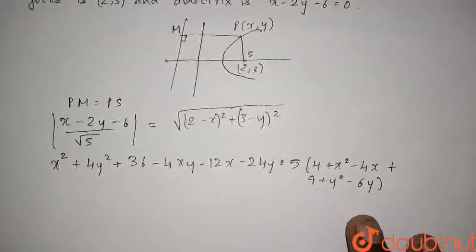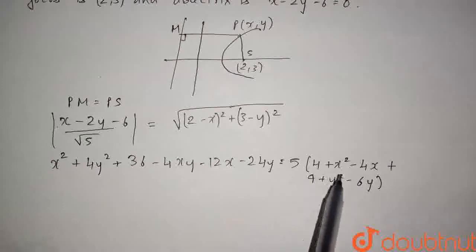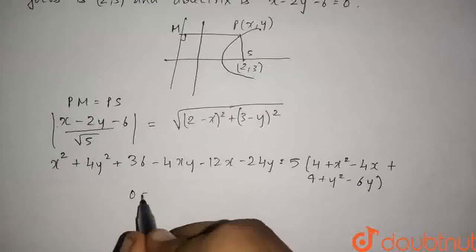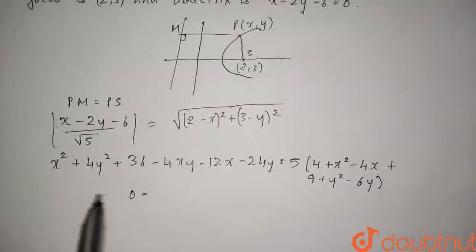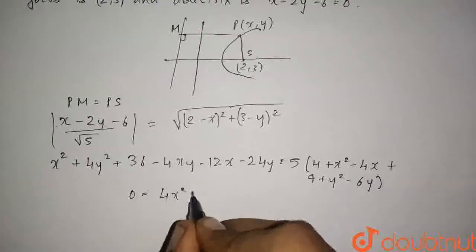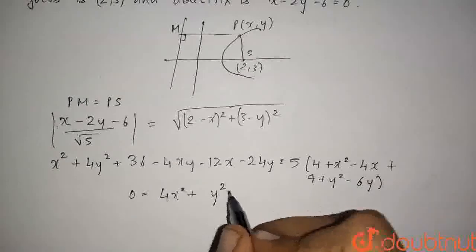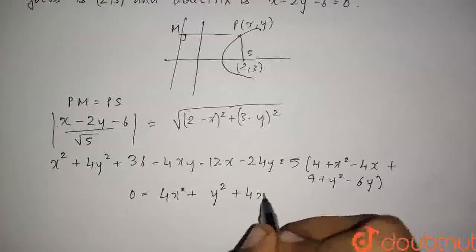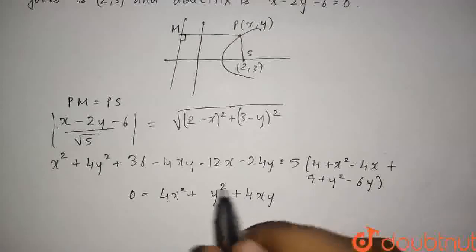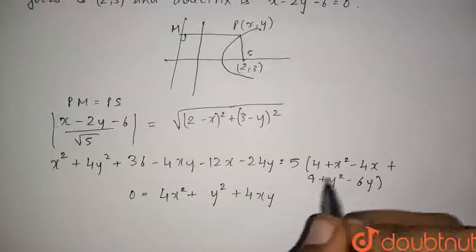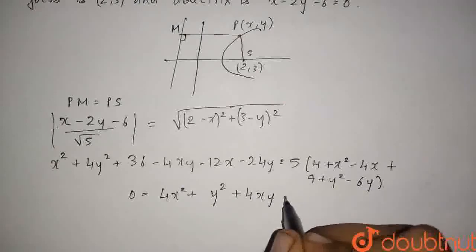Now, solving this equation further, taking all the x² terms, y² terms all on the right-hand side, the left-hand side will become 0. We will have 5x² minus x², so it will become 4x². Similarly, the y² term will be 5y² minus 4y², which will be y² plus 4xy. This 4xy will come on the right-hand side directly.